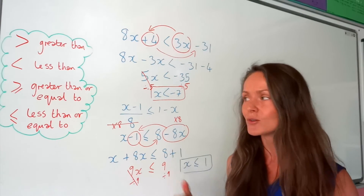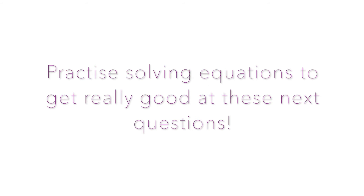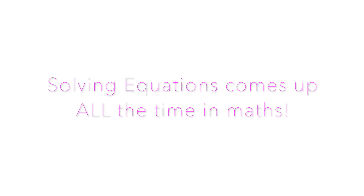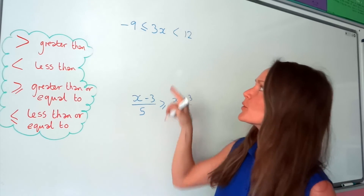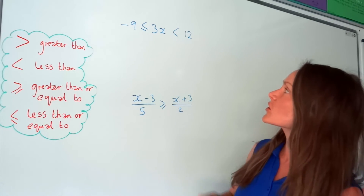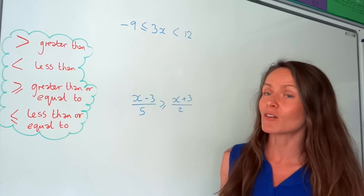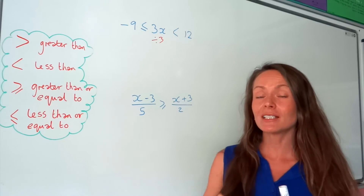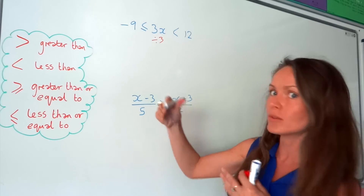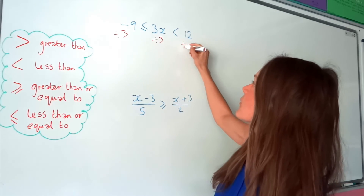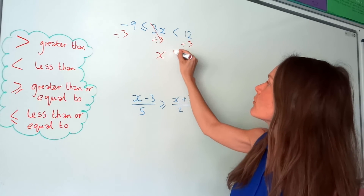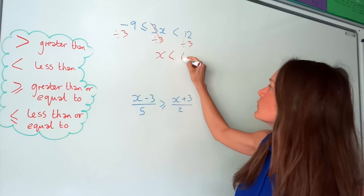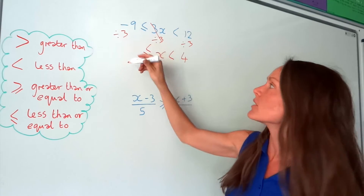Hopefully those weren't too difficult, because I'm about to make them even harder. Actually the first one here isn't that hard. I can see x is being multiplied by 3, so the opposite is to divide by 3. Remember to divide everything in that inequality by 3. 3 divided by 3 leaves 1x. On the right-hand side, 12 divided by 3 is 4, and on the left-hand side, minus 9 divided by 3 is minus 3.